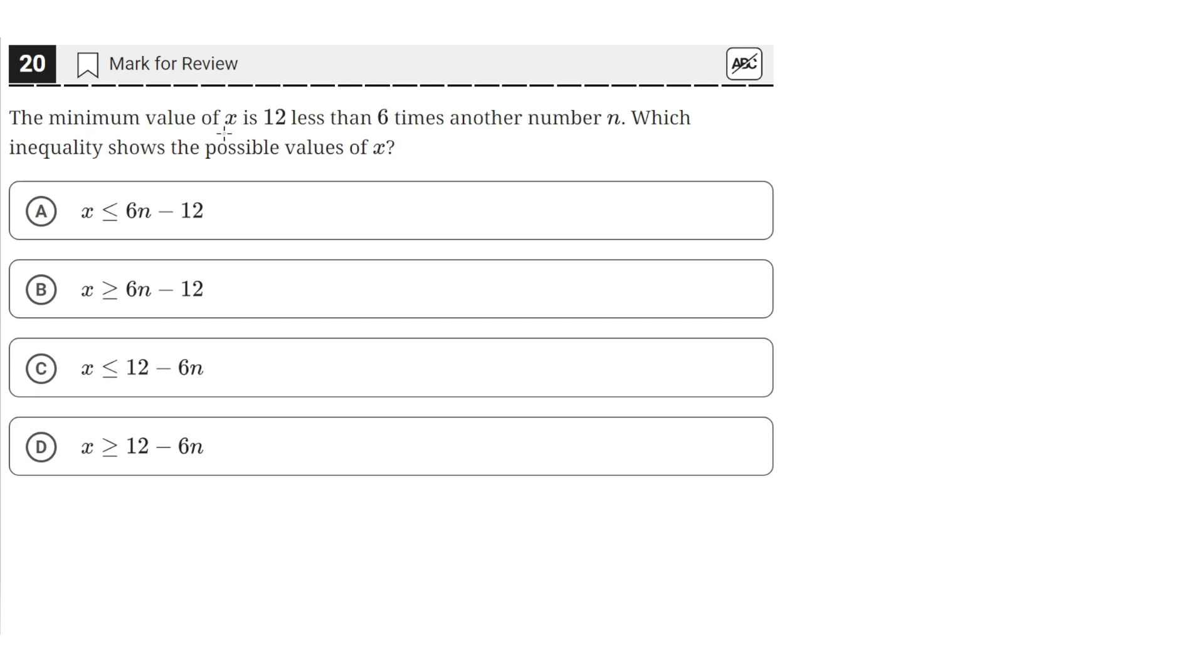The minimum value of x is 12 less than 6 times another number n. Which inequality shows the possible values of x?